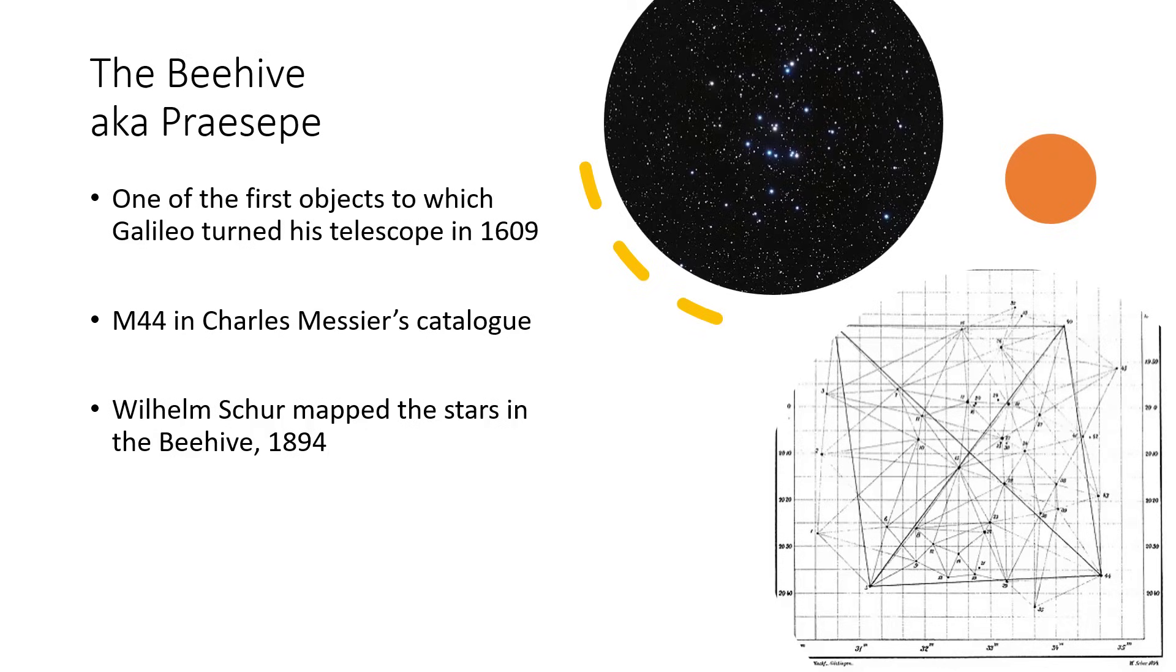On the right there, there's a little map that was drawn by Wilhelm Schur in 1894, trying to very precisely map out where the stars in the Beehive Cluster are.